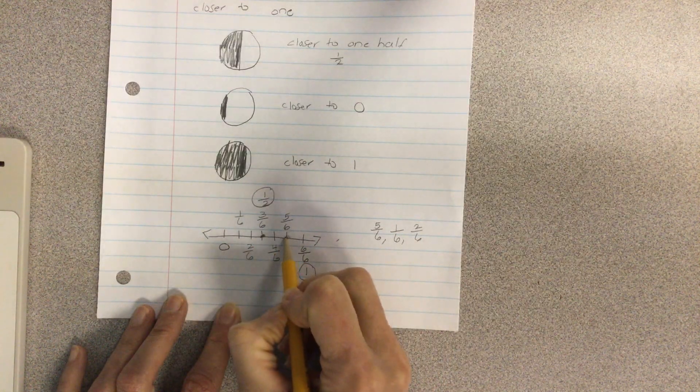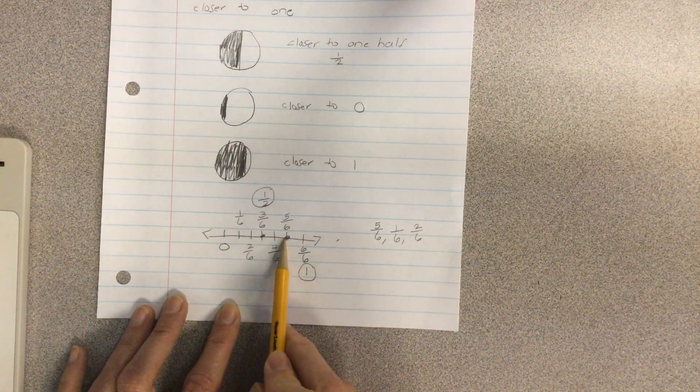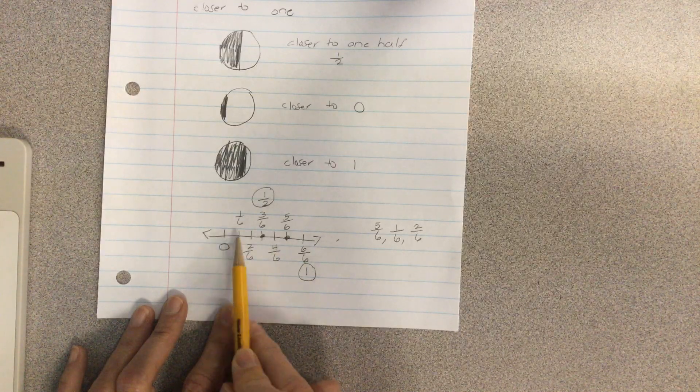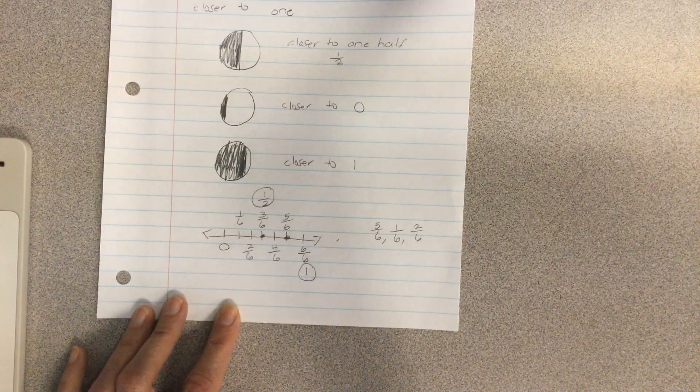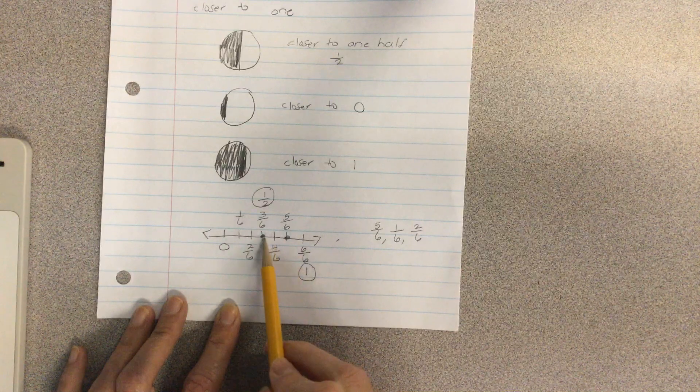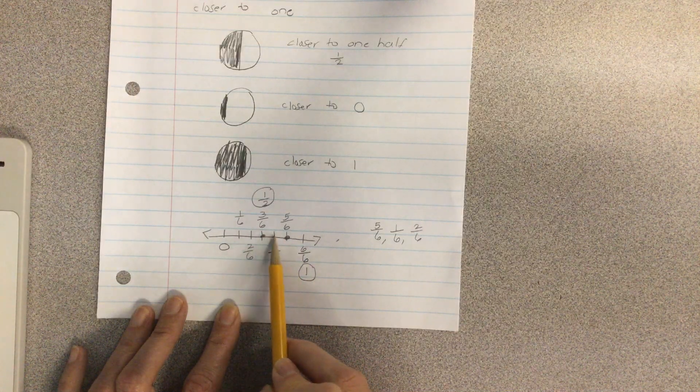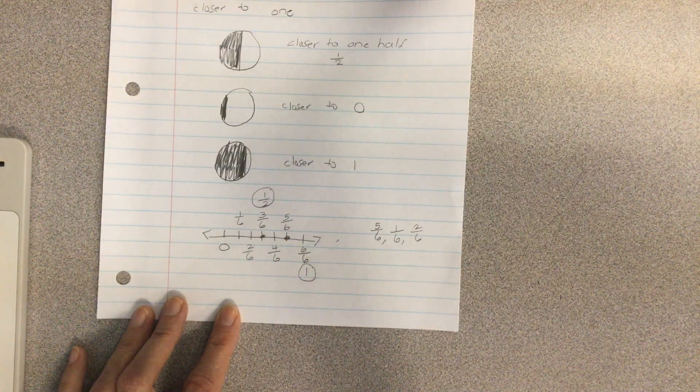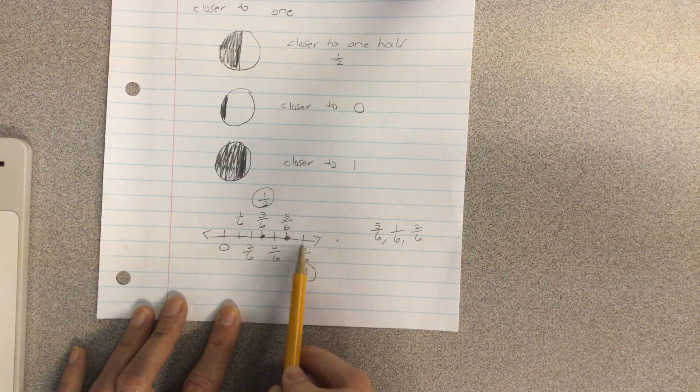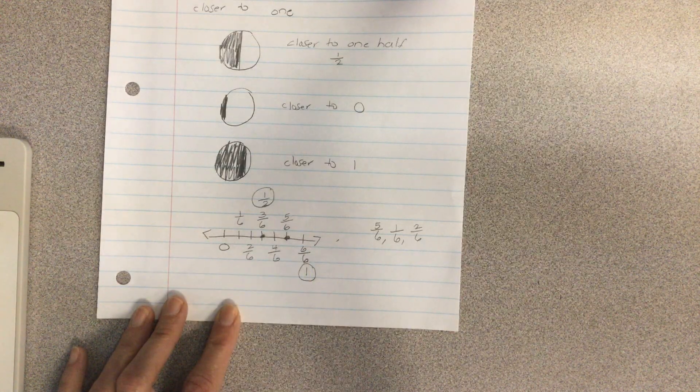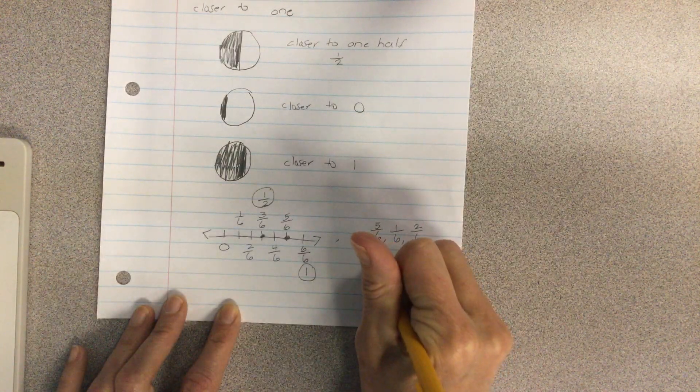So let's start with five sixths. And we're going to plot it right here. Here's where five sixths is. Is that closer to zero? It's one, two, three, four, five spaces away from zero. Is it closer to one half? It's one, two spaces away from one half. Or is it closer to one whole? It's one space away from a whole. So that means it's closer to one.